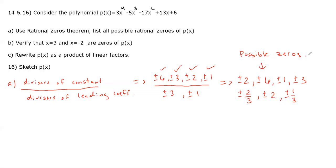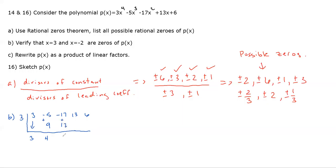Now verify that x = 3 and x = −2 are zeros using synthetic division. Synthetic division with 3 and coefficients 3, −5, −17, 13, 6: bring down 3; 3 × 3 = 9; 9 + (−5) = 4; 3 × 4 = 12; 12 + (−17) = −5; 3 × (−5) = −15; 13 + (−15) = −2; 3 × (−2) = −6; −6 + 6 = 0. So x = 3 is confirmed as a zero.